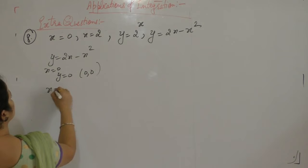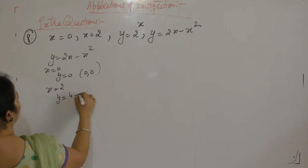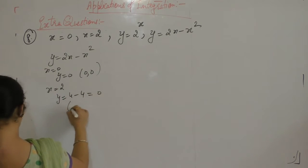When x is 2, y is 2 times 2, 4 minus 2 square, so 2, 0.